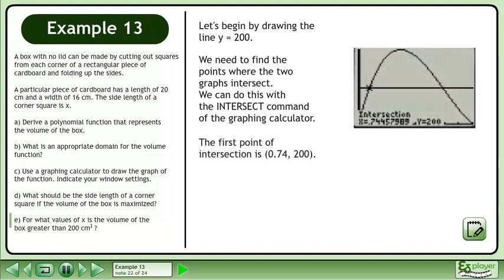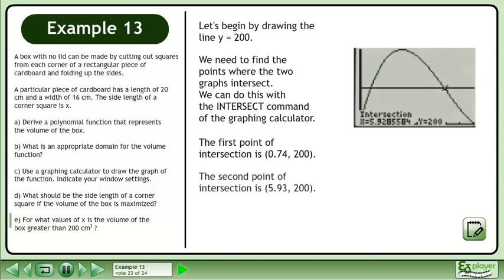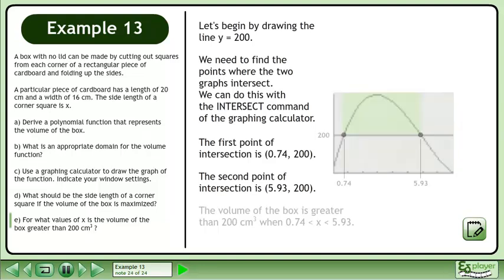The first point of intersection is (0.74, 200). The second point of intersection is (5.93, 200). The volume of the box is greater than 200 cm³ when x is between 0.74 and 5.93.